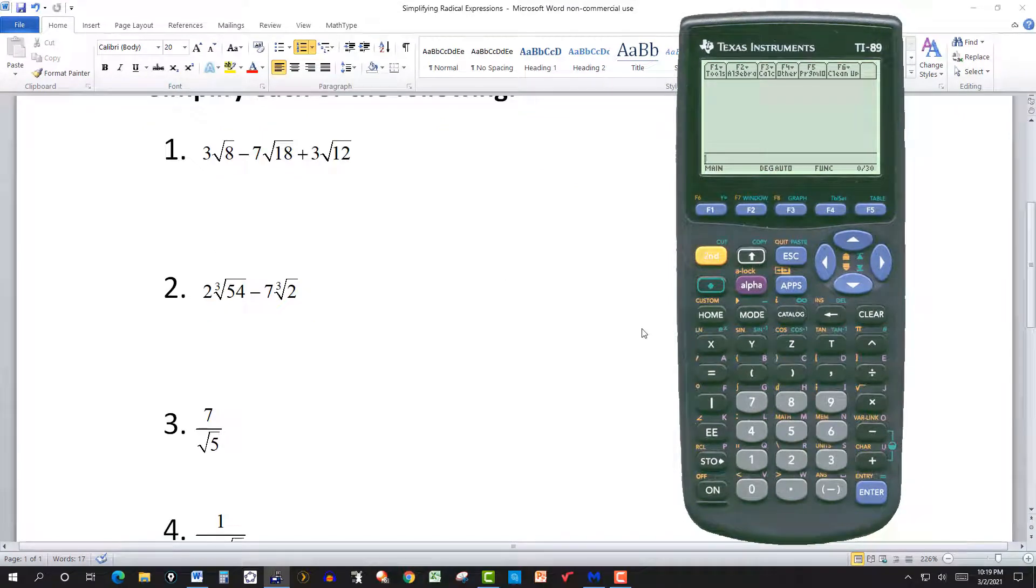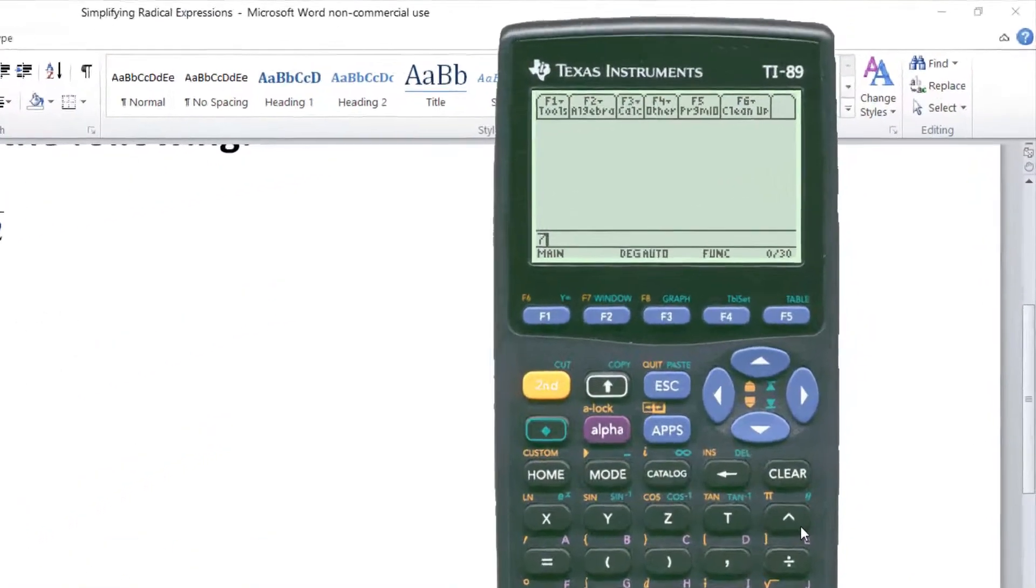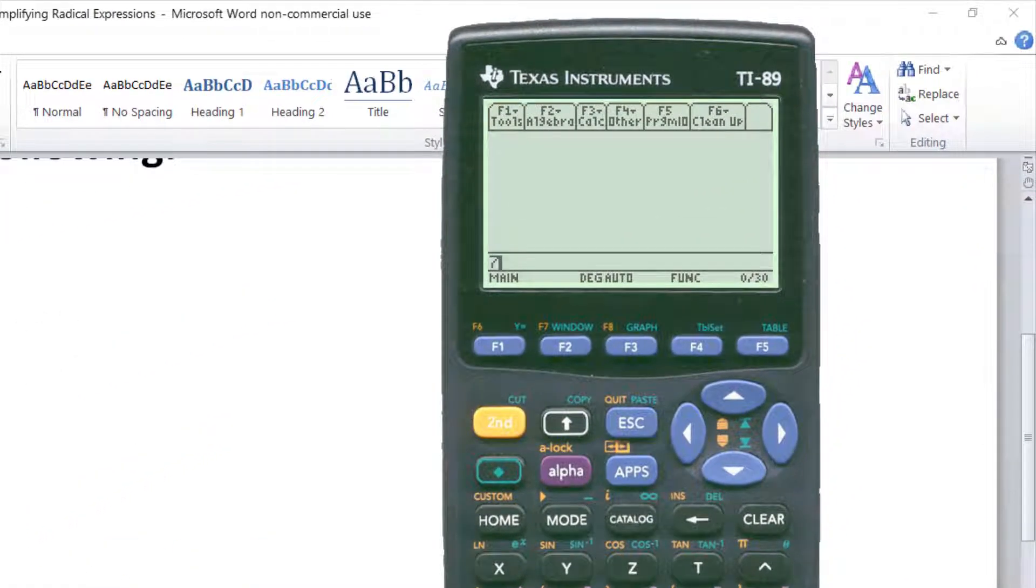We have 7 over the square root of 5. That one's pretty straightforward. Again remember, you have a fraction. We cannot leave a fraction with a radical in the denominator. So here I just say 7 divide by, and second, square root of 5, close parentheses. And that's the simplified answer.